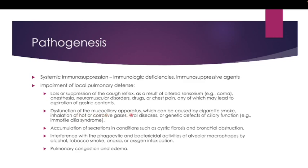The second impairment of local pulmonary defense is dysfunction of the mucociliary apparatus. This is usually caused by cigarette smoke — inhalation of hot and corrosive gases — combined with superimposed viral infection and genetic defects of ciliary function, for example immotile cilia syndrome. This impairs the mucociliary apparatus, leading to increased secretion and a breeding ground for pathogens. Accumulation of secretions in conditions such as cystic fibrosis and bronchial obstruction also provides a breeding ground.